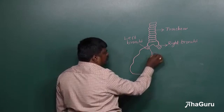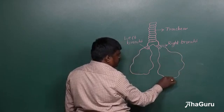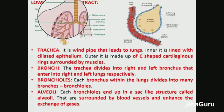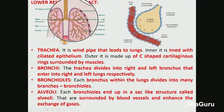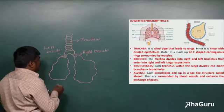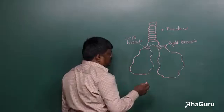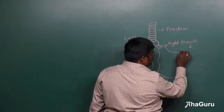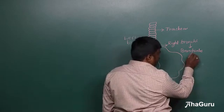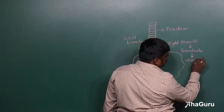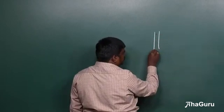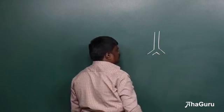Each bronchus enters into the lungs, where it further divides into branch-like structures inside. You can see these branching structures inside the lungs where the bronchus further divides completely.